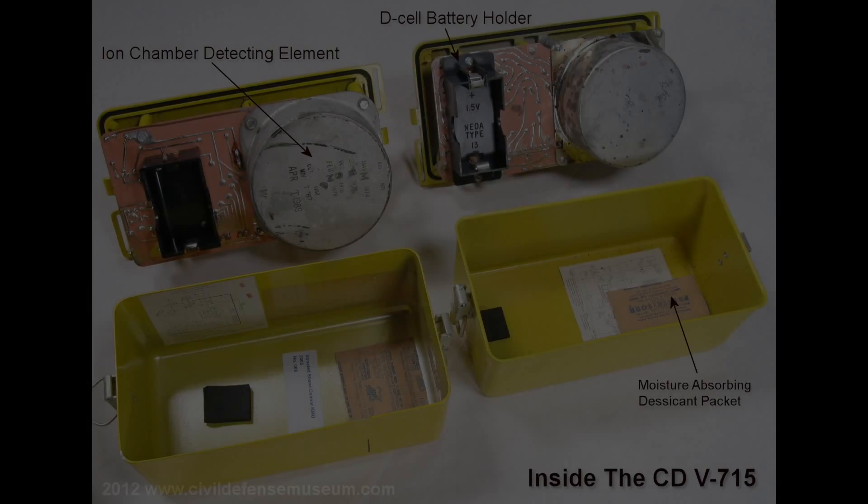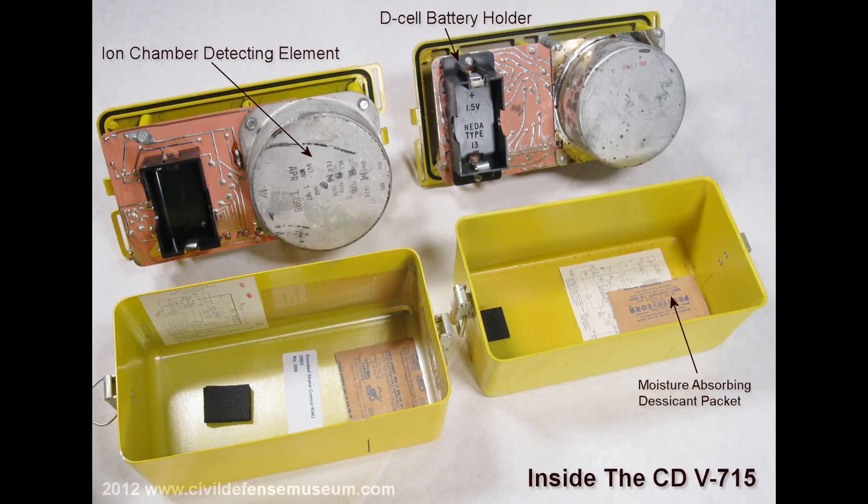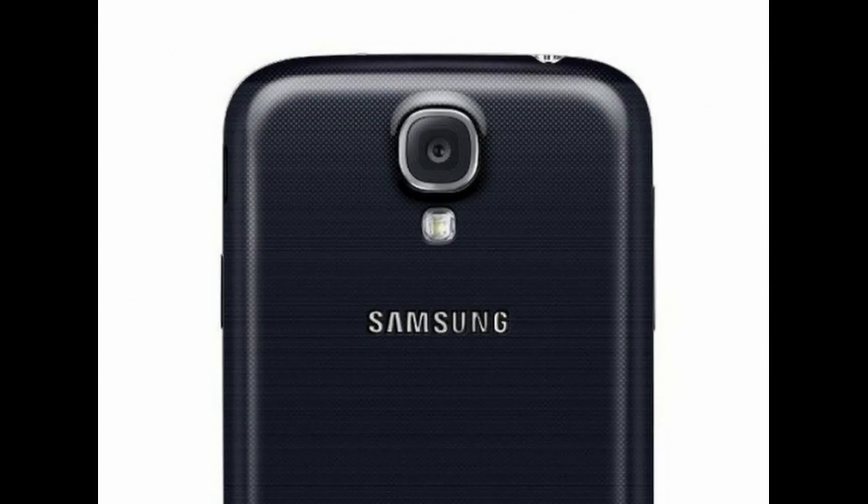There are various ways to detect nuclear radiation. Ion chambers can be used to detect nuclear radiation, which is how the old CDV-715s detected it. Even the camera on your phone can be used to detect radiation. I will put the link to the app in the description.